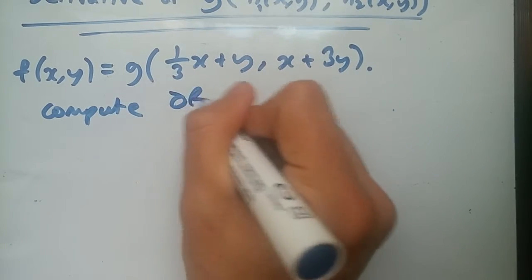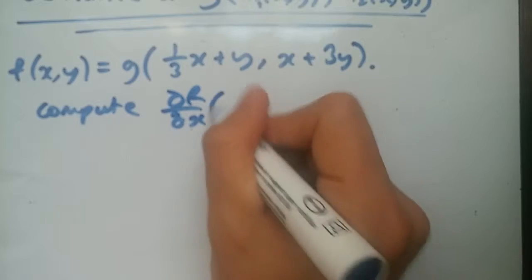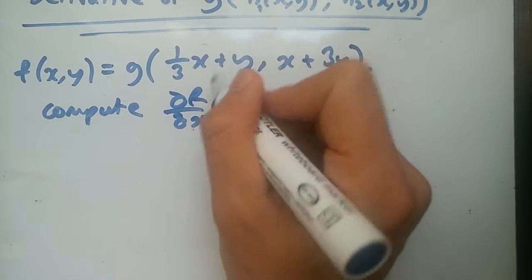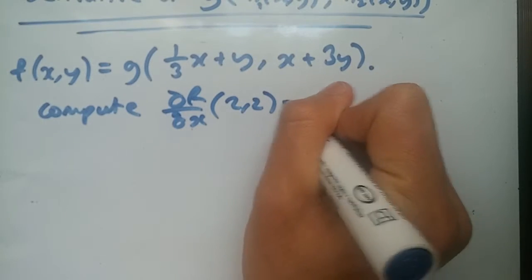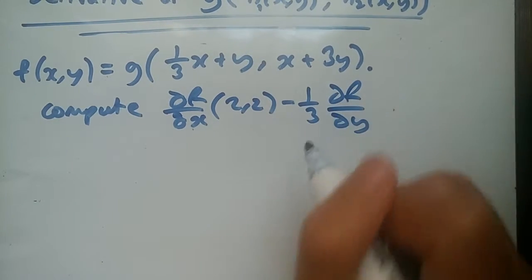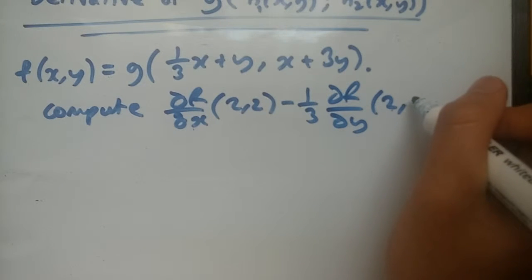Just a quick reminder, we are using the chain rule, nothing else but the chain rule. Now suppose again, on the same mapping from R squared to R in real coordinate space, we have a function f(x,y) in 2D equals another one g times 1/3x plus y and x plus 3y.